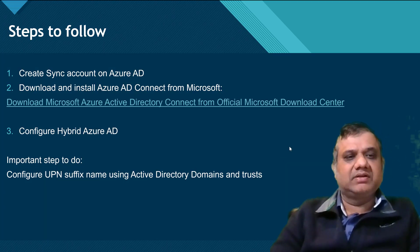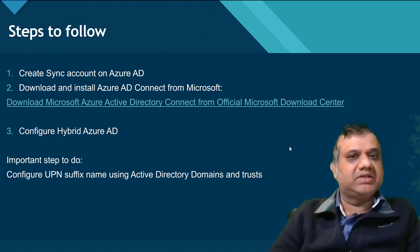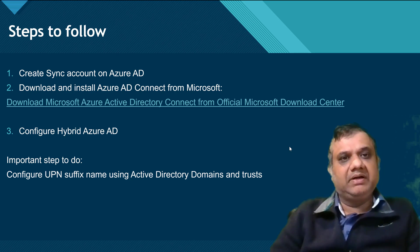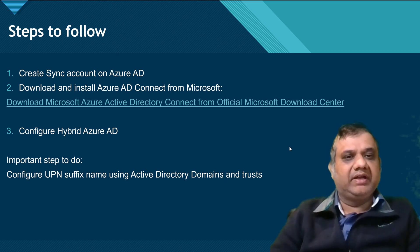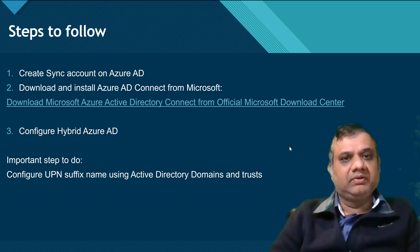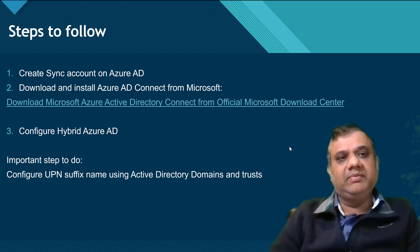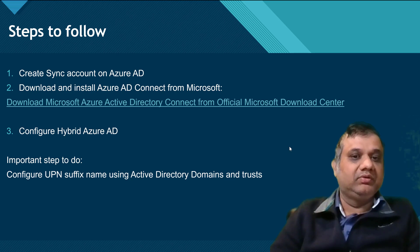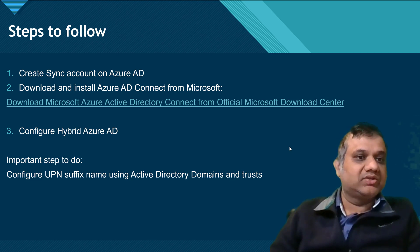The very first thing I recommend is to create a service account — a sync account — that will be used for Azure AD. That account should have the Hybrid Administrator permission, which is required to configure Azure AD Connect. You also need an enterprise global admin account for the installation. Second, we'll download Azure AD Connect and go through the installation. The final step will be configuring Hybrid Azure AD. One important prerequisite is configuring the UPN suffix name using Active Directory Domains and Trusts.